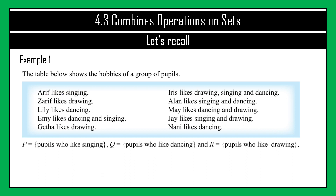Arif likes singing, so I'll label him P. Zarif likes drawing, so that's R. Lily likes dancing, which is Q. Gita likes drawing, so that's R as well. Nani likes dancing, which is Q. For those with two hobbies — Amy likes dancing and singing, so that's Q intersect P. Since dancing and singing is the same combination as singing and dancing, I'll make it consistent as P intersect Q.